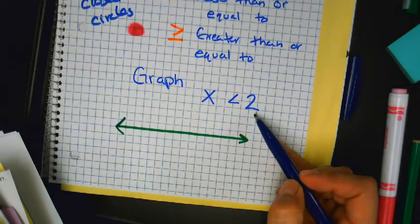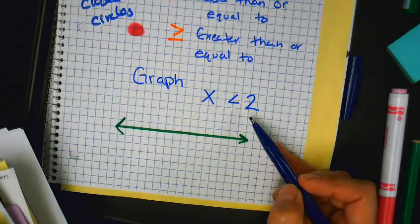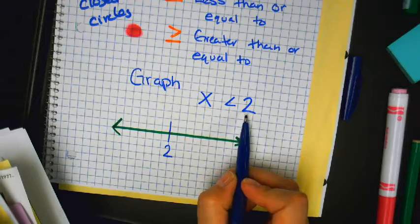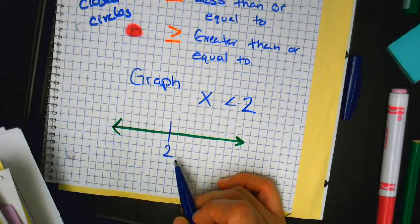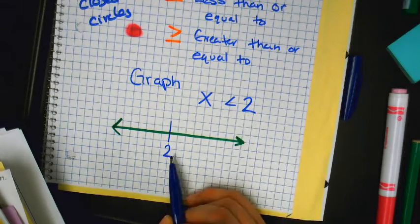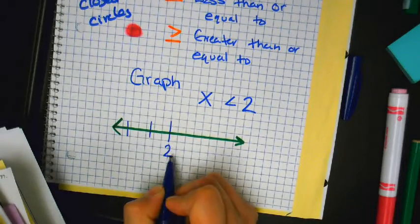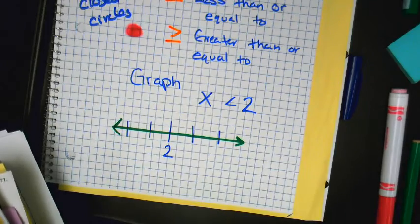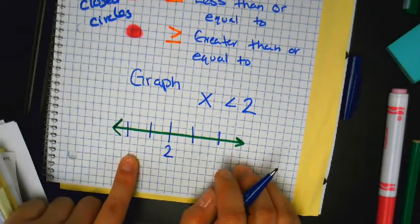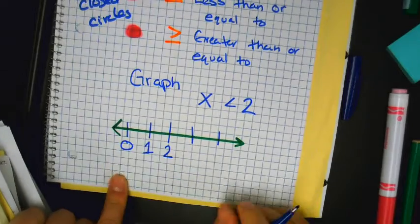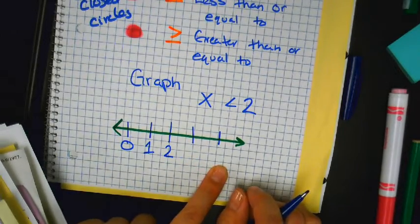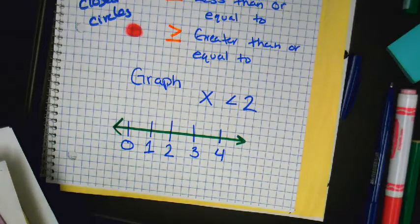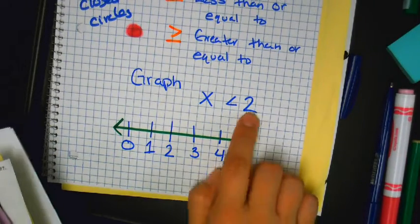See this number? Whatever this number is, you're going to put it right in the middle of your number line. Give me two numbers that are less than this number in order, and the next two numbers above it — fill in a number line. What two numbers are immediately lower than 2? One and zero. And the two numbers after 2? Three and four. You are going to place a circle on top of whatever this number is.